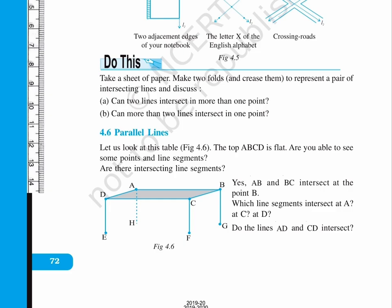We have a figure of this table with the top ABCD and the bottom four points are E, F, G, H. Yes, AB and BC intersect at the point B.